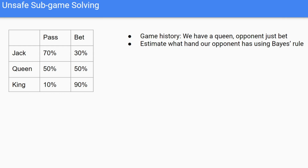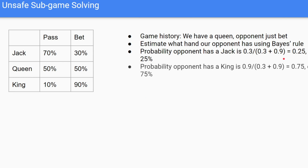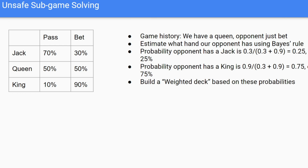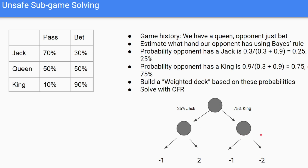The first thing we need to do is estimate whatever hand our opponent has using Bayes' rule. We do this by taking the average of the probability: probability of Jack is 30% divided by the total percentages (30% for Jack and 90% for King), giving us 25%. We can do the same with the King, giving us 75%. We don't need to do this for the Queen since we already have it. This builds a weighted deck — when running CFR in this subgame, we draw a King 75% of the time and a Jack 25% of the time, then solve CFR with a chance node for opponent having King or Jack.